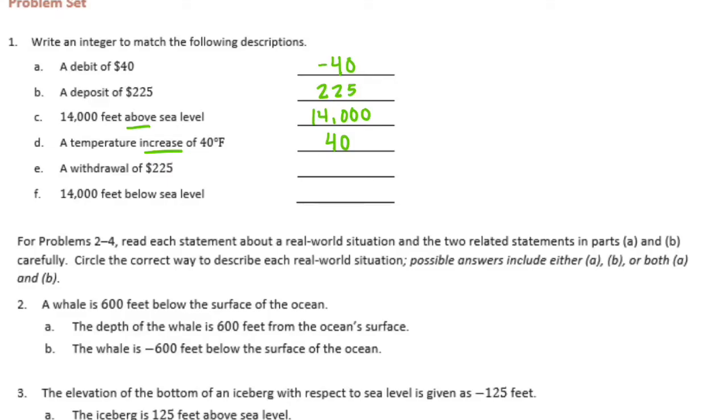A withdrawal of $225. If you withdraw money, you take it out, so your balance is going to go down $225. And 14,000 feet below sea level. Below is negative.